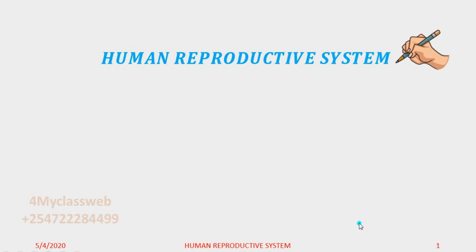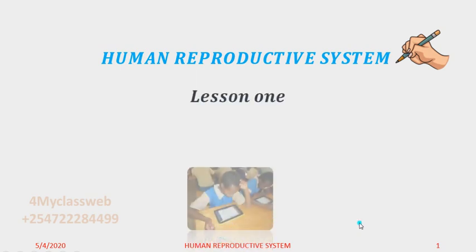Welcome to this new topic on the Human Reproductive System. This work was supposed to be covered in Class 6 and is also covered in Class 8, so for reference, use the textbook for Class 6 or Class 8. This will be our first lesson.